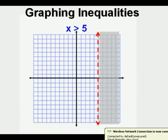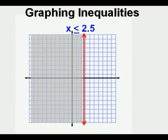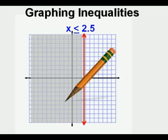Let's graph this inequality: x is less than or equal to 2.5. When getting ready to graph, it helps to say it differently — say x is equal to and less than 2.5. It helps to say equal to or not equal to first, since that determines the type of line you draw. We draw a vertical line at x equals 2.5. Since it's less than or equal to, we make that a solid vertical boundary line. And since it's less than, we shade everything to the left of that solid boundary line.